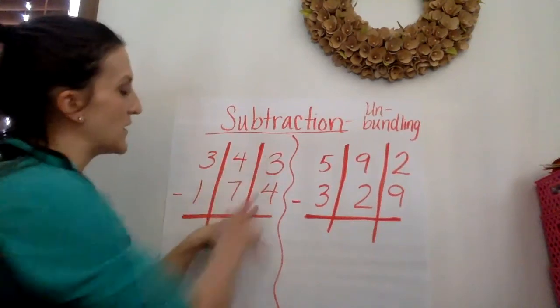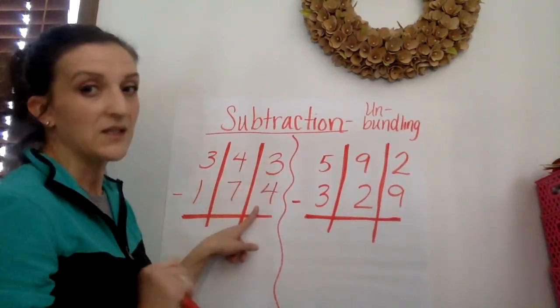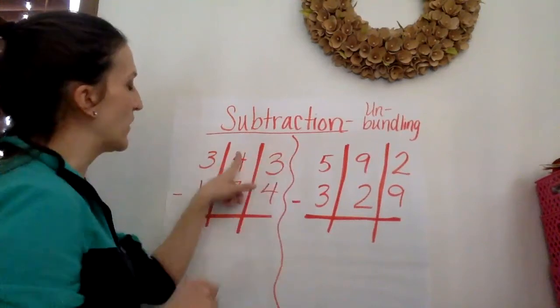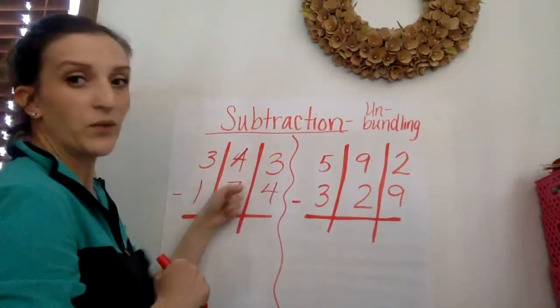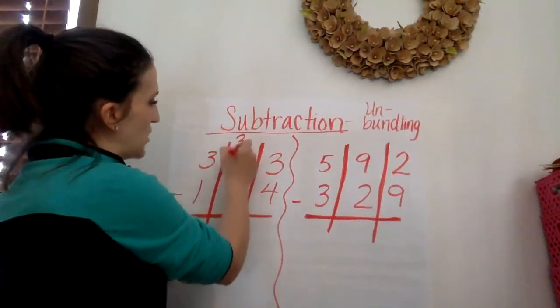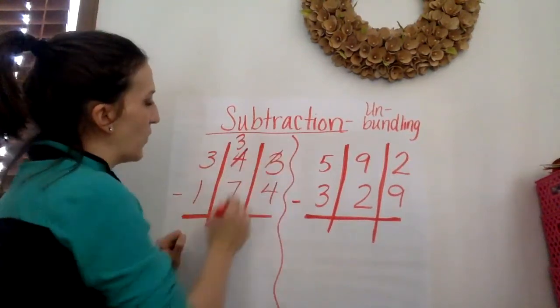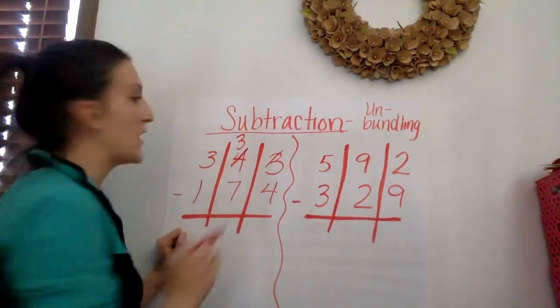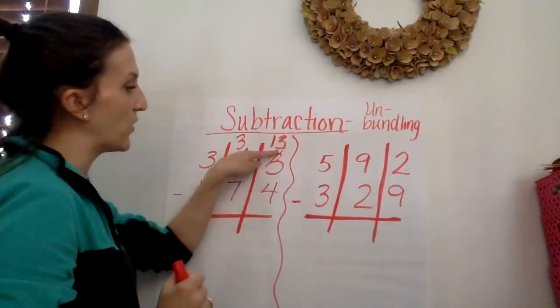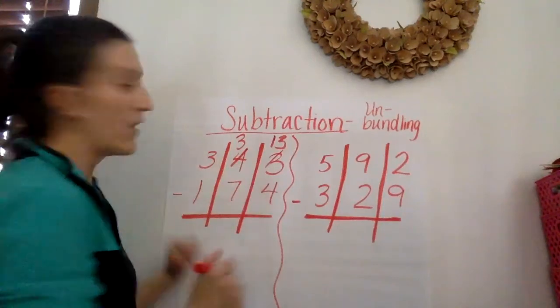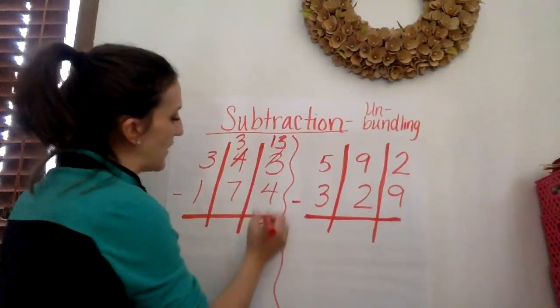So in the ones place I have 3 minus 4. It doesn't work. So I'm going to go over to the tens place. I'm going to knock on the door and say hey tens can I have one please. They are nice. They like to share. They're going to let us have one. So now there are 3 tens but now there are 13 ones. So we have 13 minus 4. 13 minus 4 equals 9.